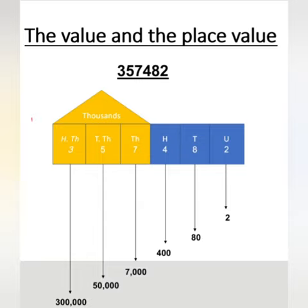Continuing with 357,482: 7 is in the thousands place, 5 is in the ten-thousands place, and 3 is in the hundred-thousands place. This is the place value. For the actual values: 2 equals 2, 8 equals 80, 4 equals 400, 7 equals 7,000, 5 equals 50,000, and 3 equals 300,000.